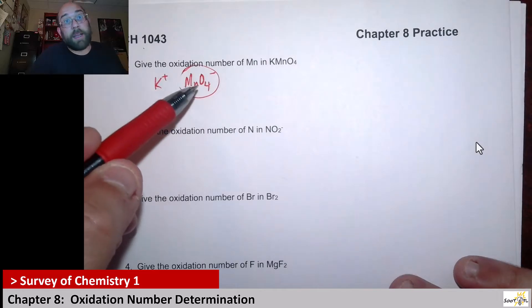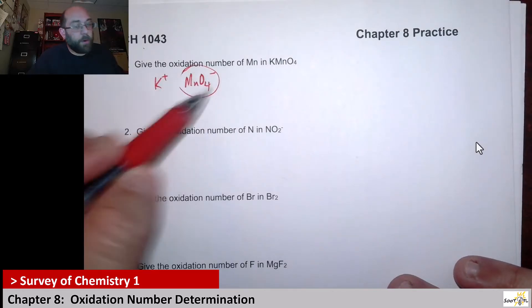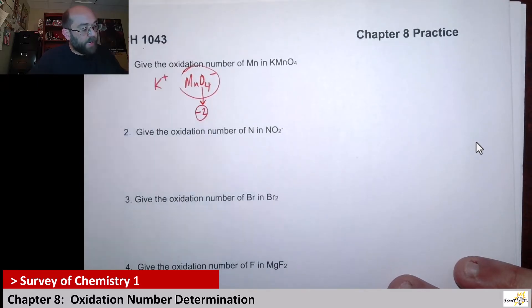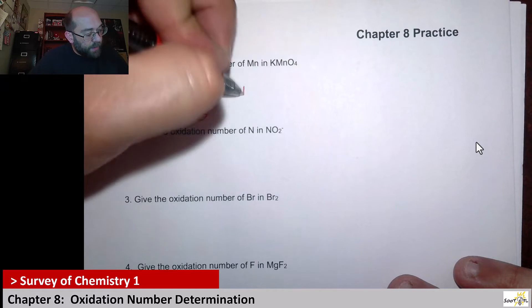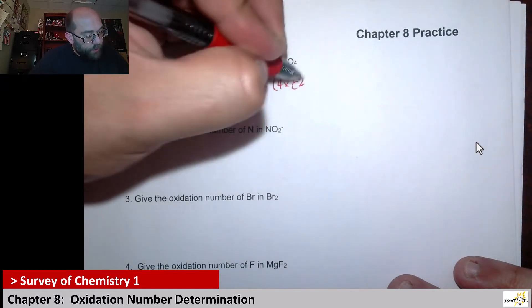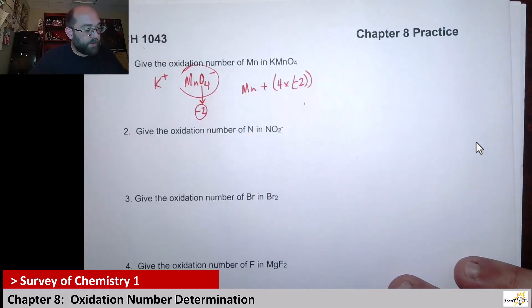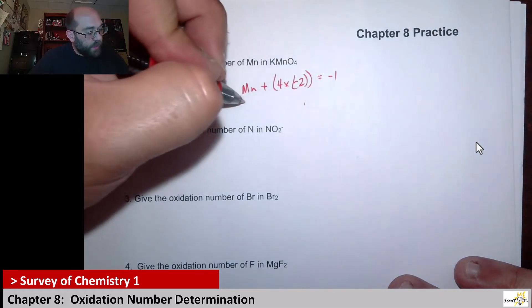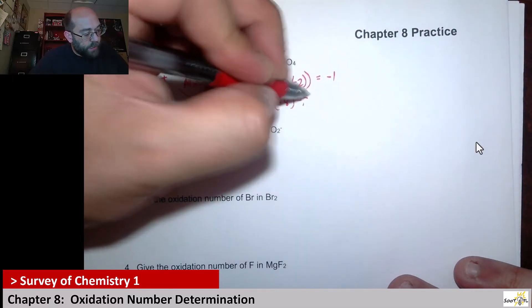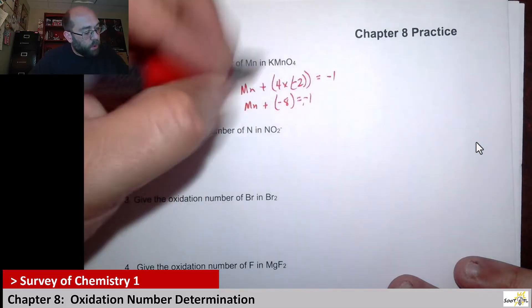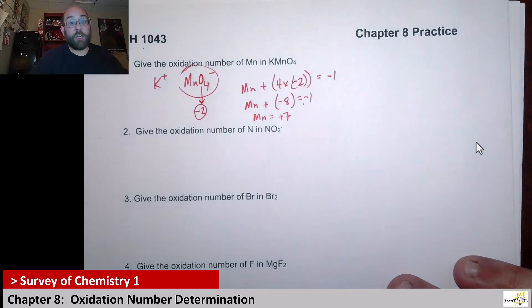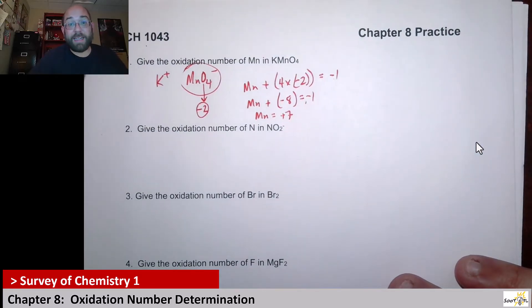From here, based off our rules, this oxygen is not part of a peroxide. We know that every oxygen here has an oxidation number of negative two. That means manganese plus four of these negative twos, so 4 times -2, should equal -1. So manganese + (-8) = -1, and therefore manganese should equal positive seven. That would be our oxidation number for manganese in permanganate.